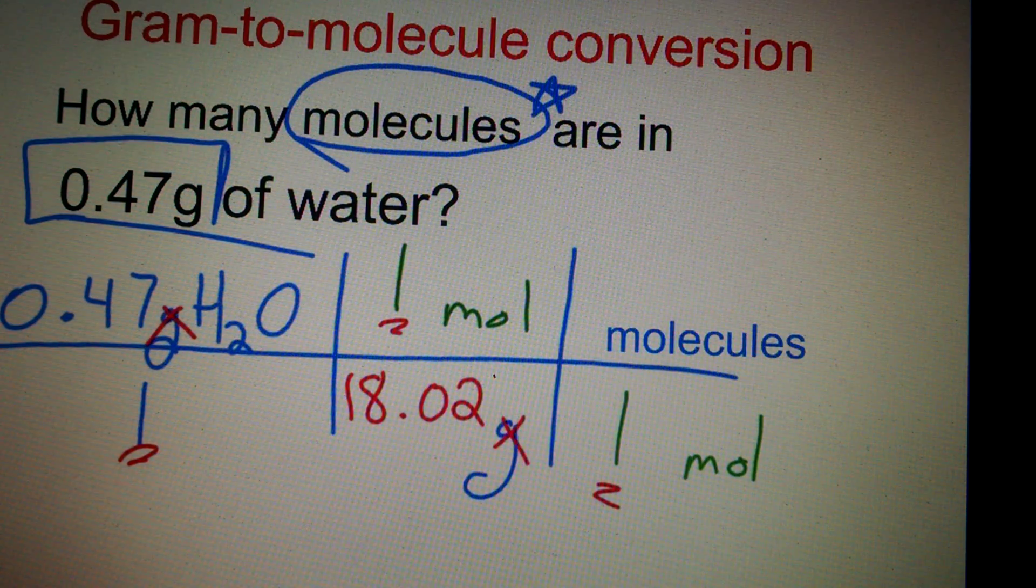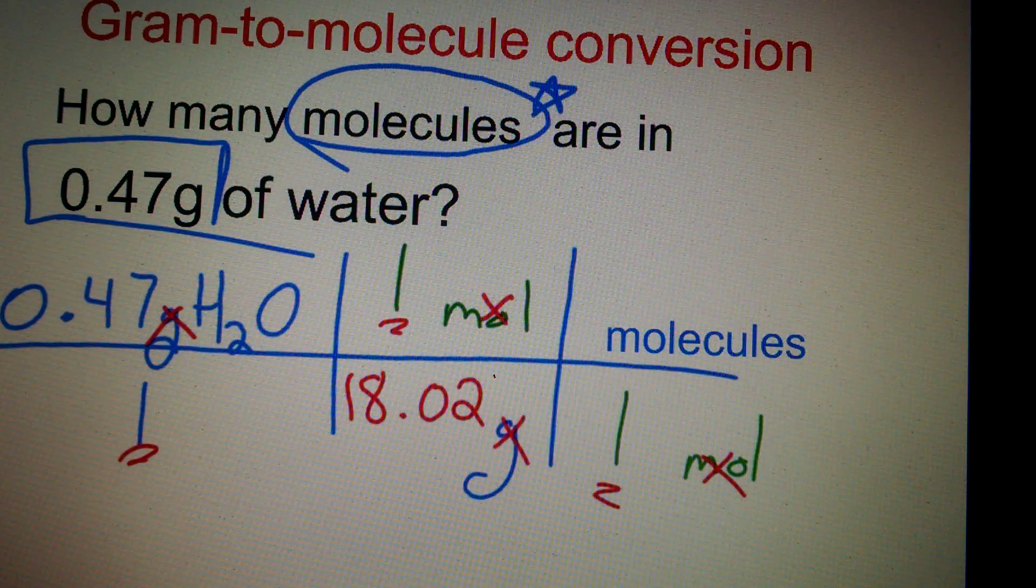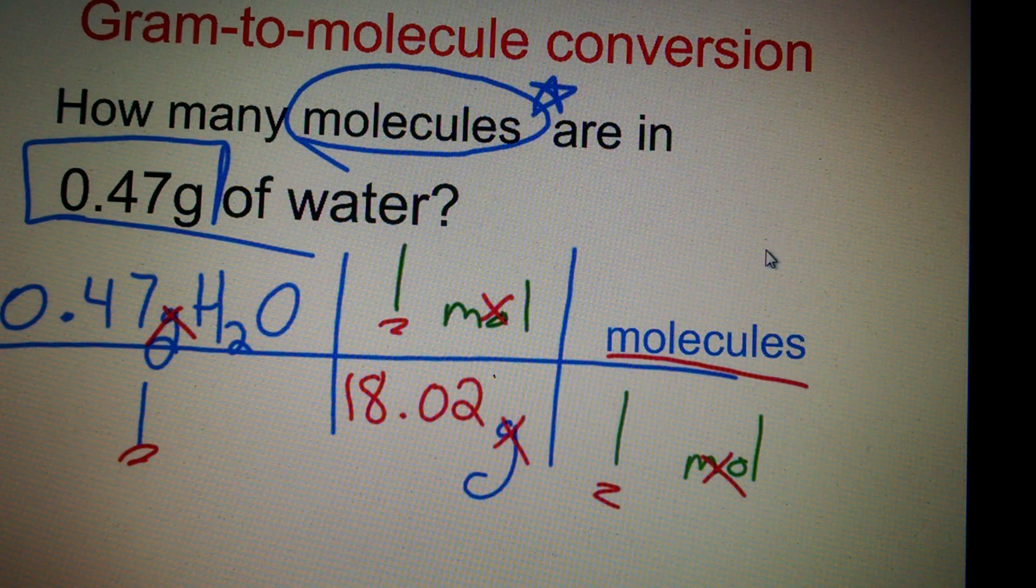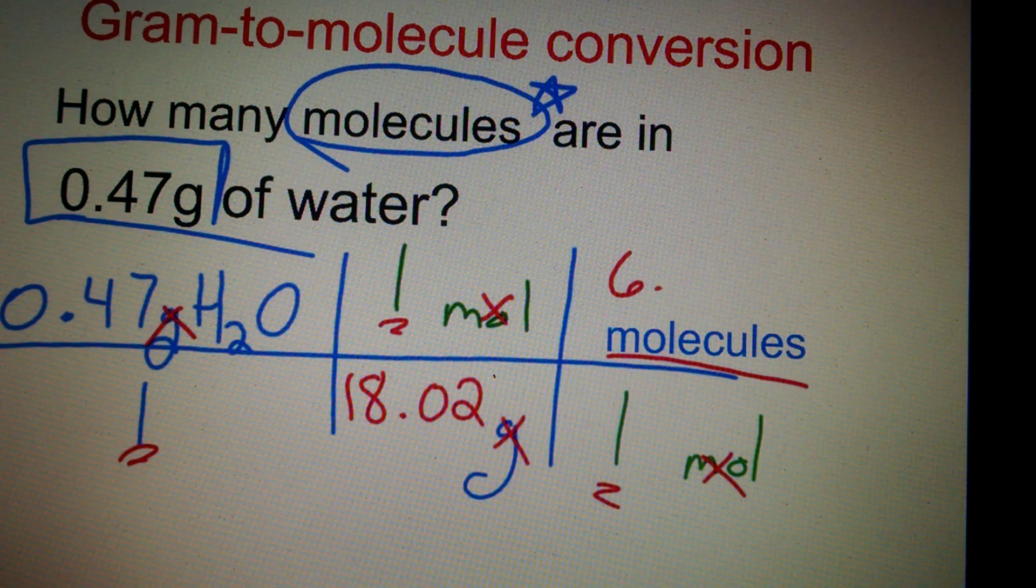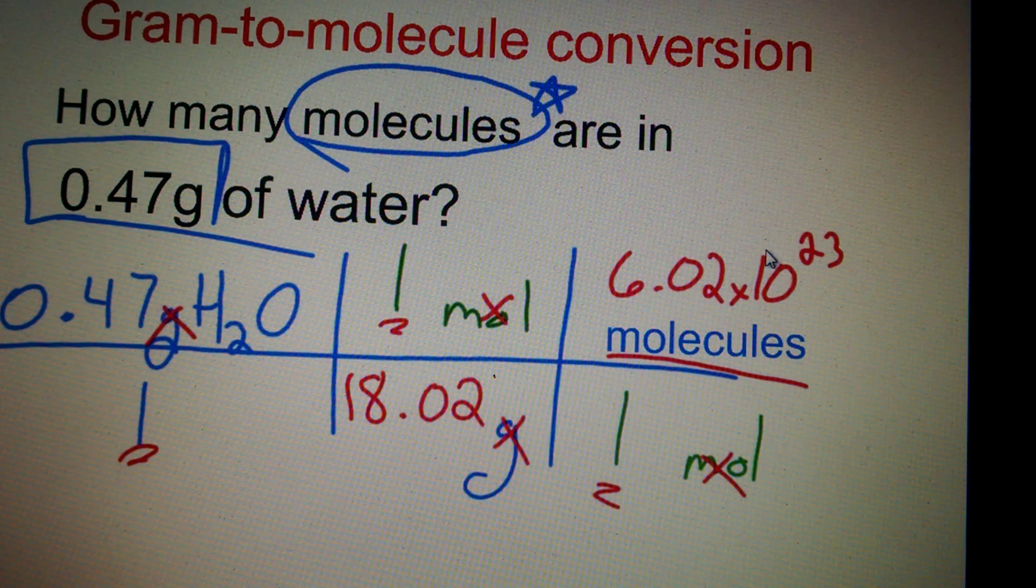Note how the grams cancel out. And note here how the mole's going to cancel out with molecules. When you drink a mole of water, that is equal to 6.02 times 10 to the 23rd molecules of water.